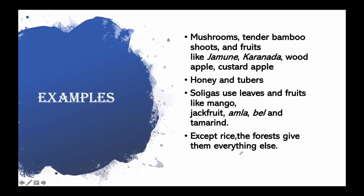According to Soligas, they get a variety of mushrooms, tender bamboo shoots, and a lot of fruits — for example, Jamun, Karnada, wood apple, and custard apple. Pronunciations can vary from place to place. There is also honey and tubers like Dioscorea and Macal. These honey and tubers are harvested throughout the year.